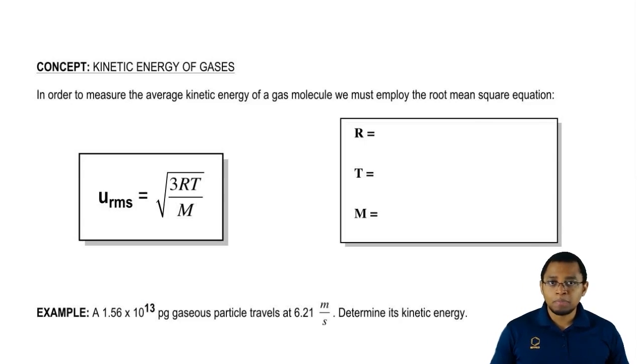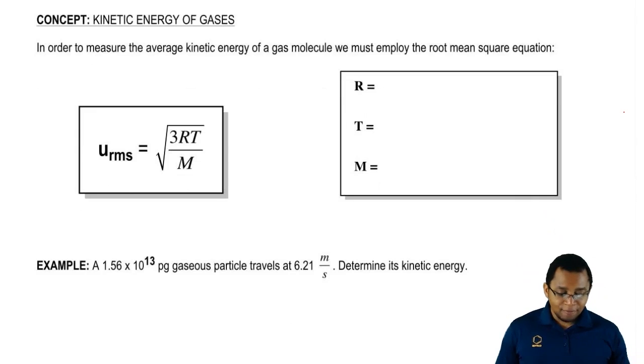This is the energy that they're going to use in order to push themselves around inside of this container. In order to measure the average kinetic energy of a gas molecule or particle, we must employ the root mean square equation. The root mean square equation is u, which stands for velocity, equals square root of 3RT over M. When I say velocity, I mean speed. The units for velocity or speed are meters per second.